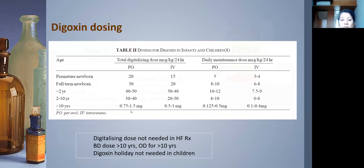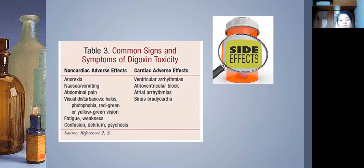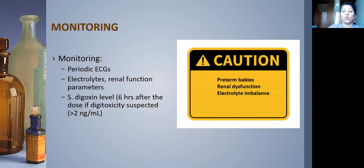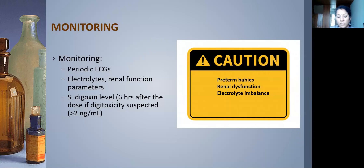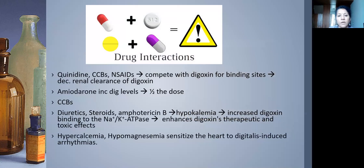Digoxin toxicity signs and symptoms: GI symptoms (anorexia, nausea, vomiting), visual disturbances, fatigue, weakness, confusion, delirium, and psychosis. It is pro-arrhythmic causing ventricular and atrial arrhythmias, heart block, and sinus bradycardia. Be particularly cautious in preterm babies and those with renal dysfunction or electrolyte imbalances.